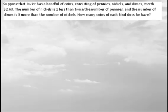Section 2.3 Problem 47. Suppose that Javier has a handful of coins consisting of pennies, nickels, and dimes worth $2.63. The number of nickels is one less than twice the number of pennies, and the number of dimes is three more than the number of nickels. How many coins of each kind does he have?